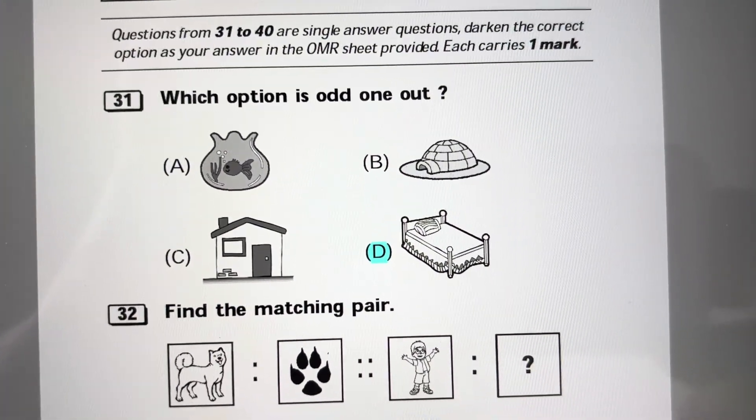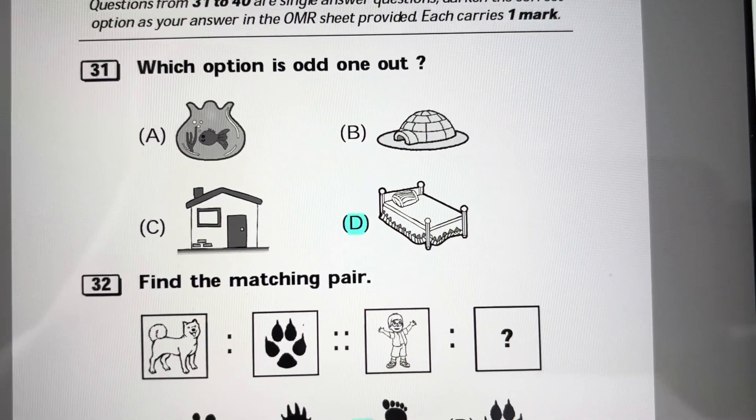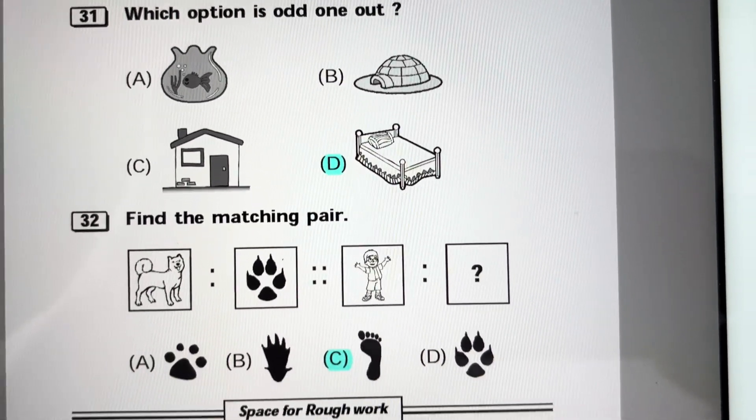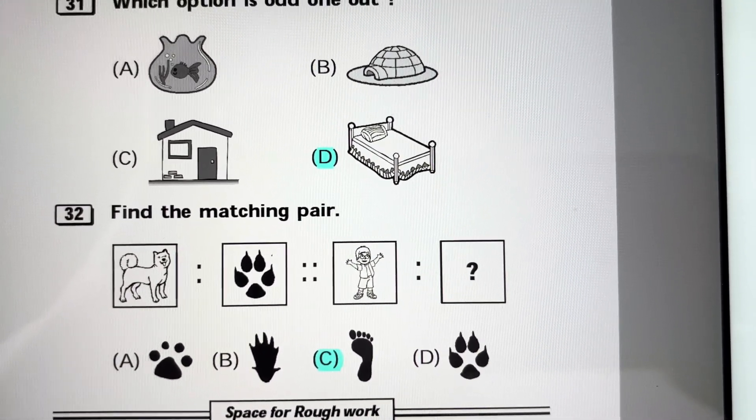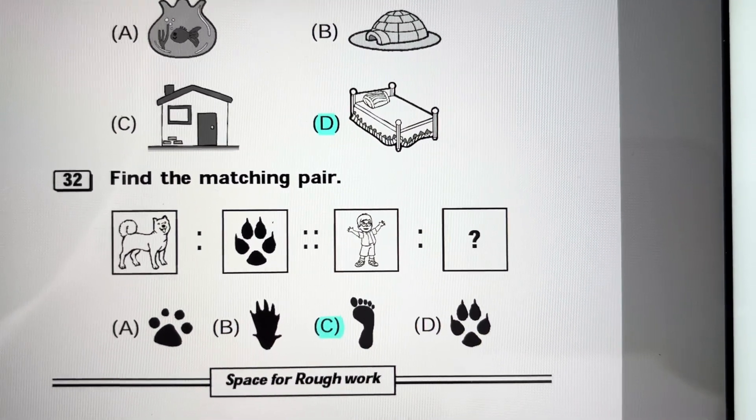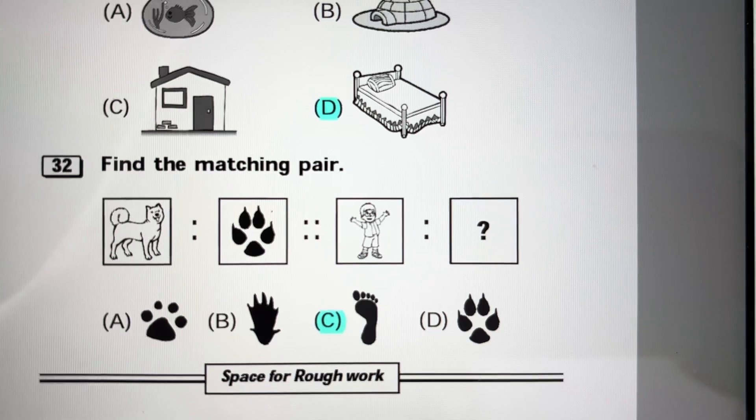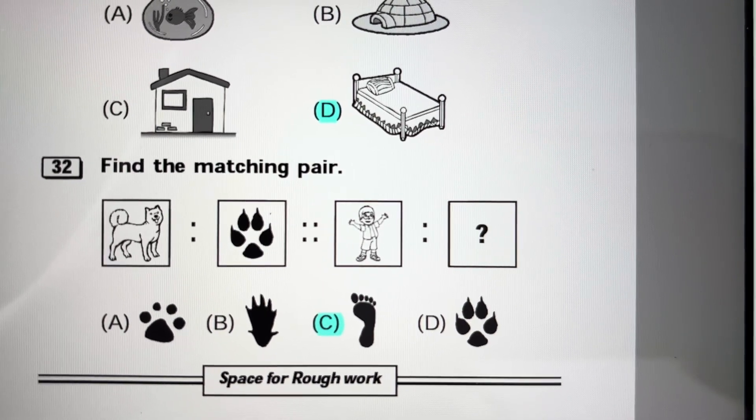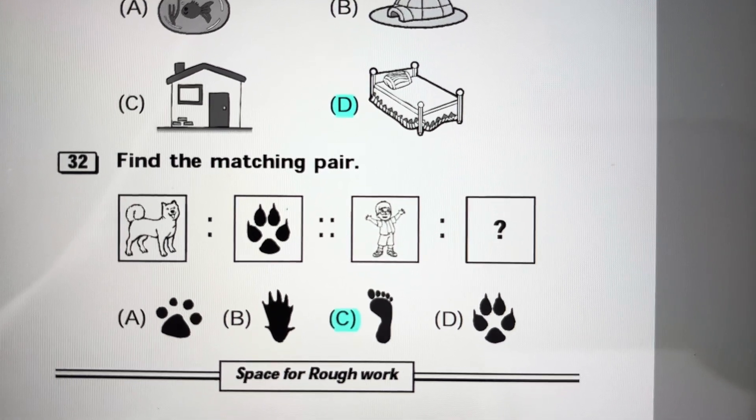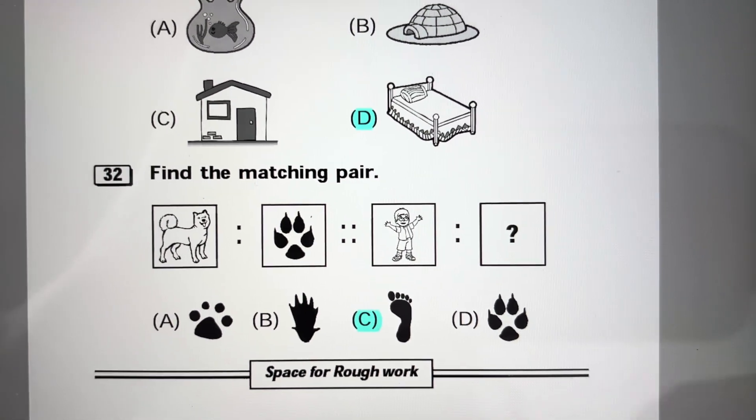Which option is odd one out? D is odd one. Others are some place to live for animal or for man, but this is for sleeping, the cot. Find the matching pair. First there is a dog and then the picture of a paw. So for a human being, it is the picture of feet, footprint. Answer is C.